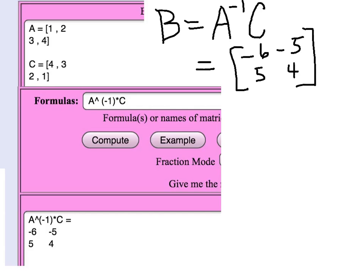So let's check and see if this matrix B really does satisfy the original equation. The original question was what do we multiply times A, 1, 2, 3, 4, to get the matrix C, 4, 3, 2, 1.